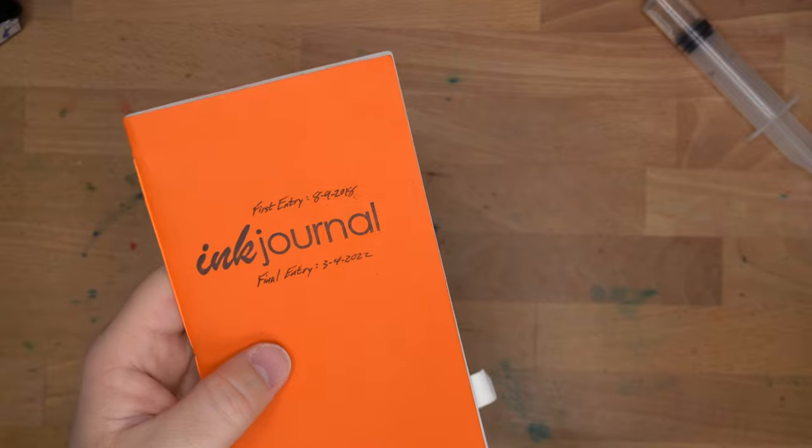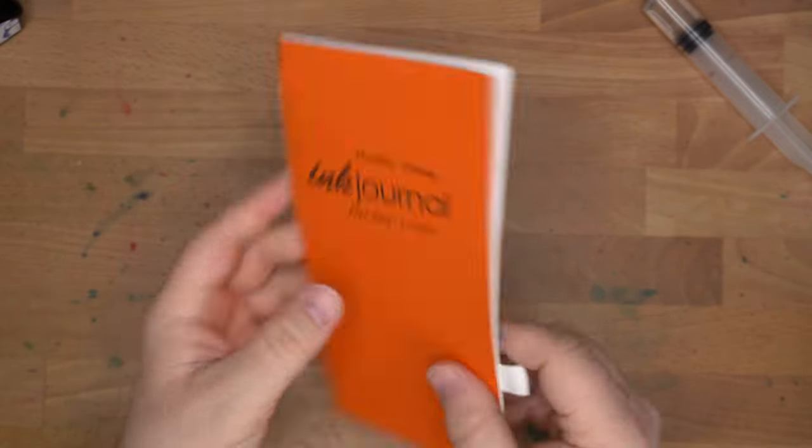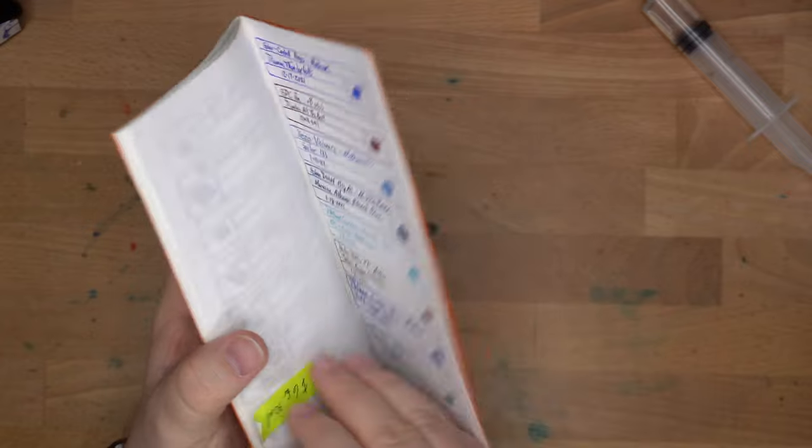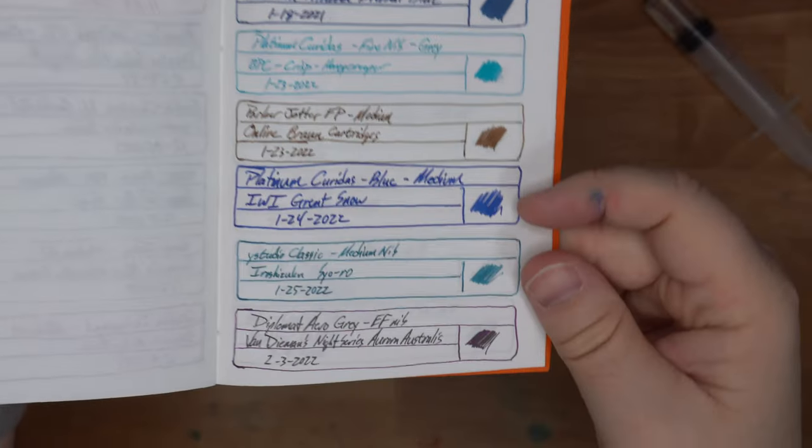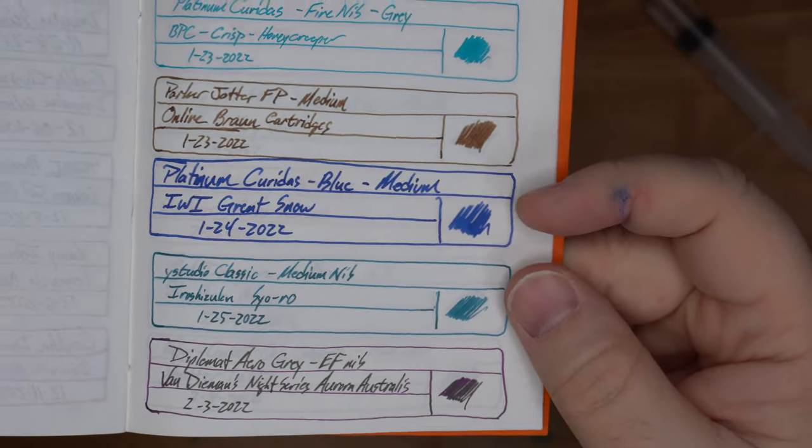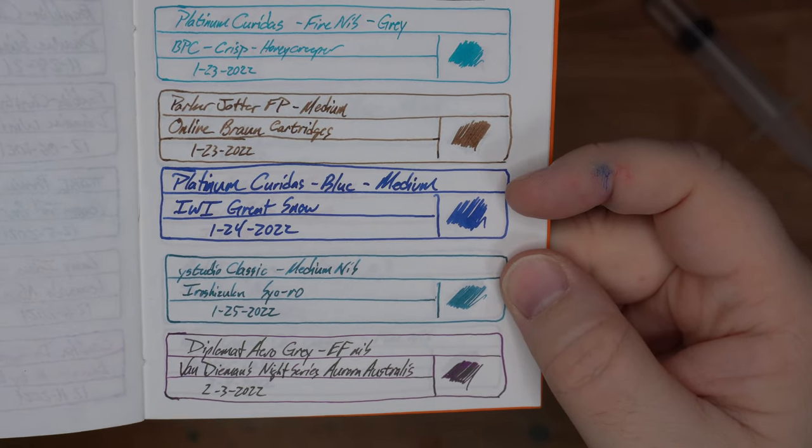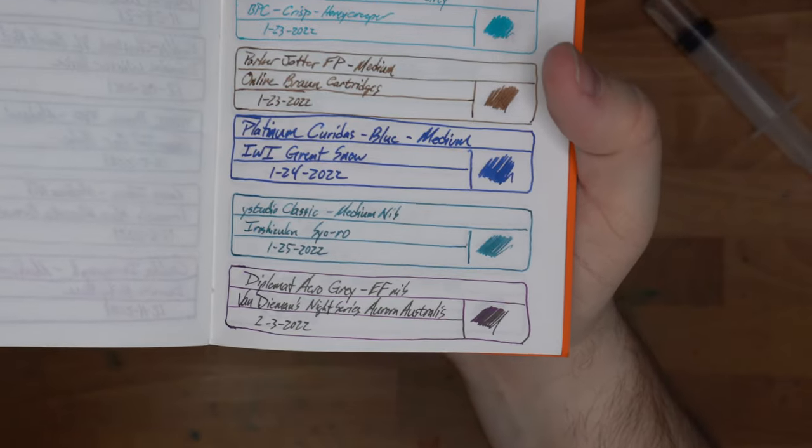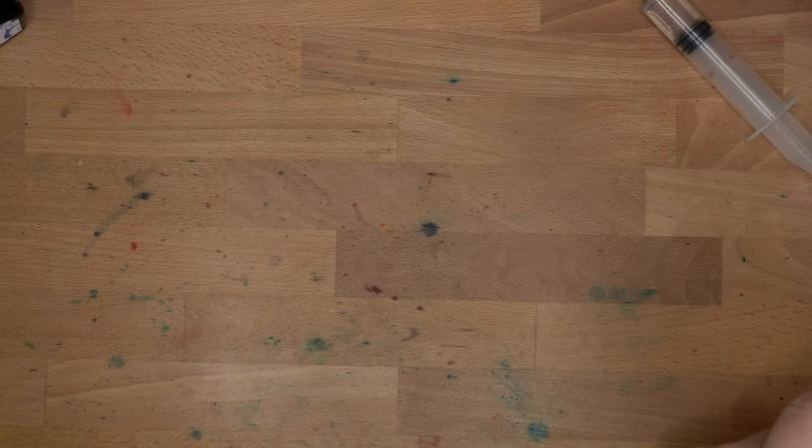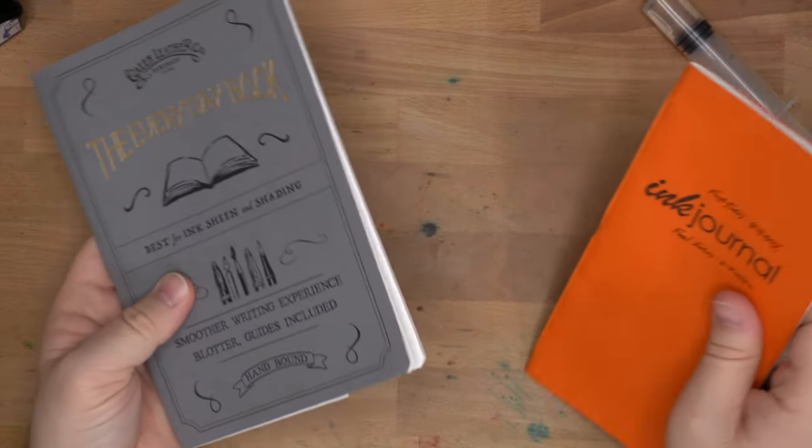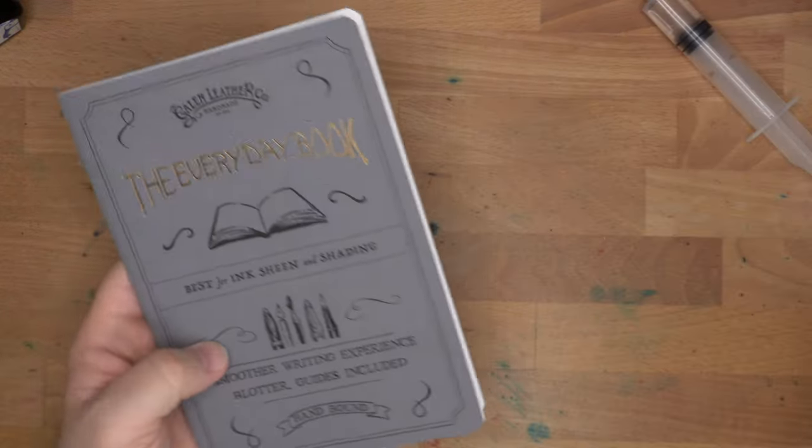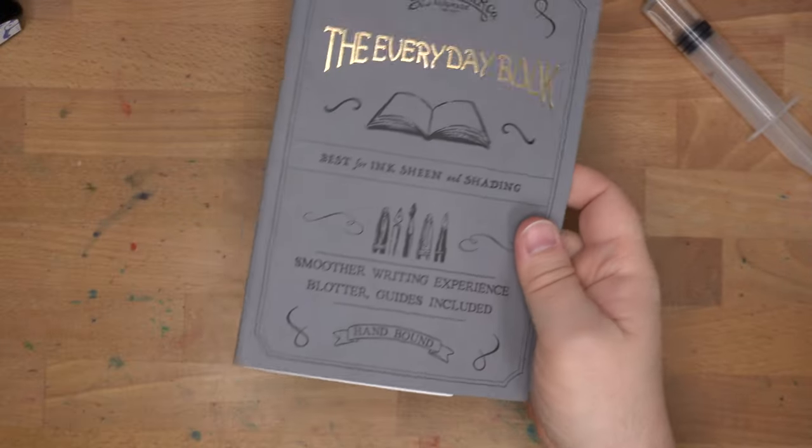Then my ink journal, which is full. I am done with this ink journal. Oh no. Very... this is Tomoe River paper, of course. Here is the Kyridos entry. It looks very nice on Tomoe River here. Did I bleed through or anything? No, of course not. It's Tomoe River. Worked very nicely on there. And then this is what I'm replacing my ink journal with because I don't think they make the Tomoe River ink journals anymore because Tomoe River is hard to find.